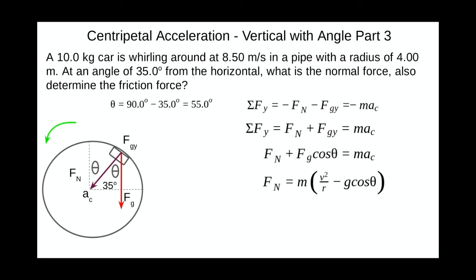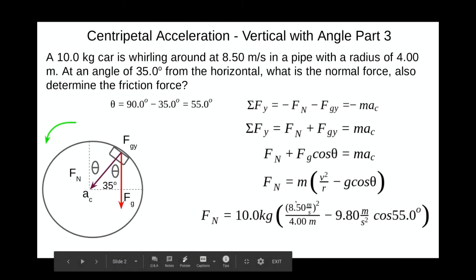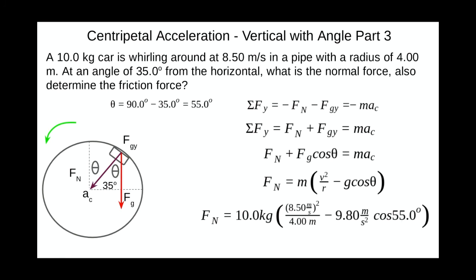Now, rearrange, pull out M like we did in the last problem, the mass, put our values. Okay. Put our values. Now, if you need to pause the video so you can see how everything goes, but do not forget to square the velocity and to multiply the angle. This all comes out to 124 newtons.